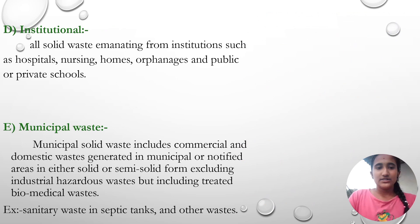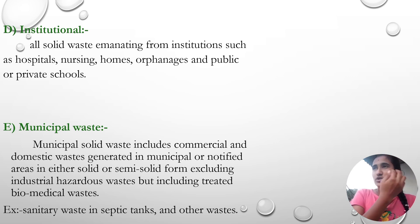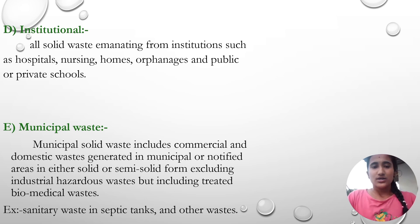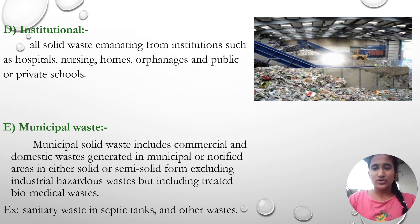The next one is institutional waste. Institutional waste means all solid waste emanating from institutions such as hospitals, nursing homes, orphanages, and public or private schools. In colleges, hospitals, or orphanages, some waste is generated — those are called institutional waste. For example, in hospitals we have glass and injection materials; in schools, papers are examples. Here you can see the waste.